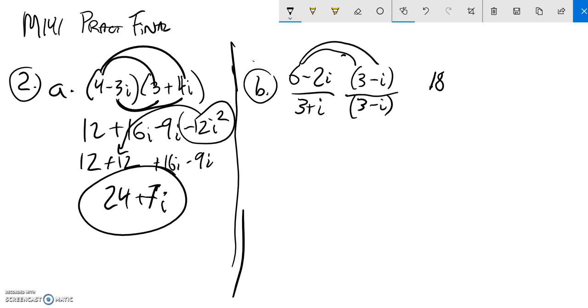6 times negative i is negative 6i, negative 2i times 3 is negative 6i, and then negative 2i times negative i is negative 2i squared, which is really a positive 2.